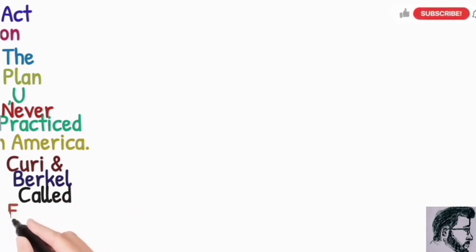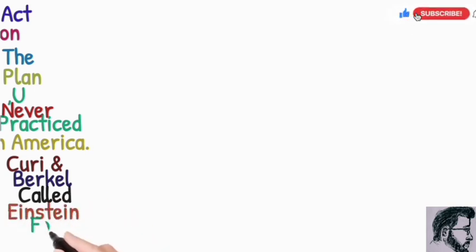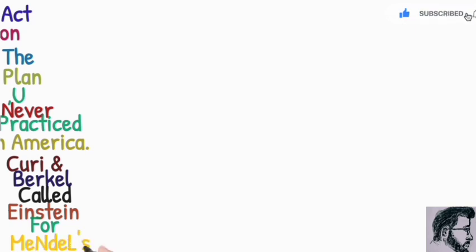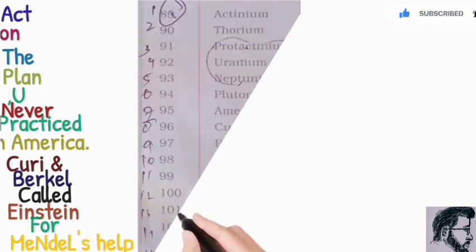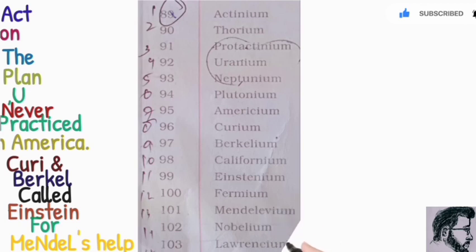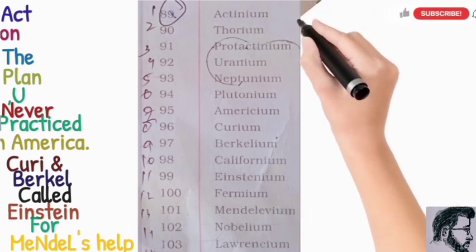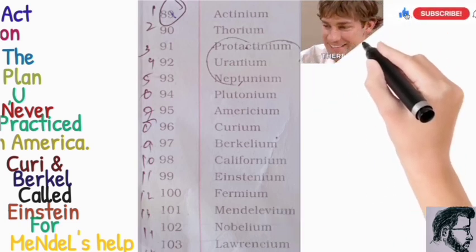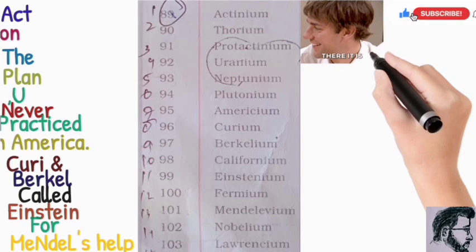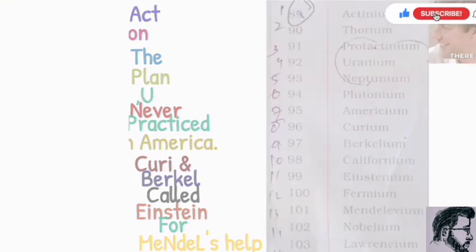As already mentioned, every word represents a member of the actinoids. The word 'Mendel's' represents three members — that is, mendelevium, nobelium, and lawrencium. The word 'help' does not mean anything on its own in this context.